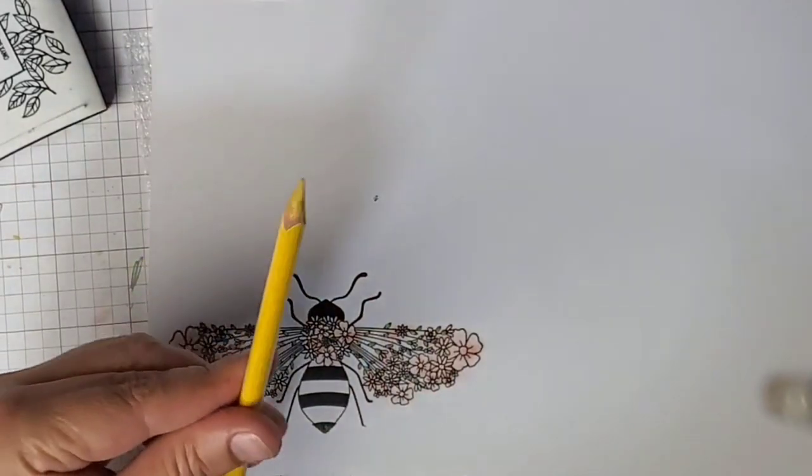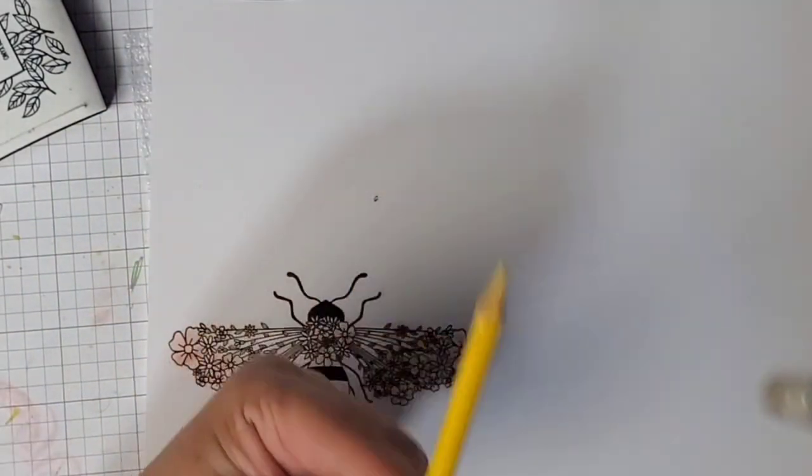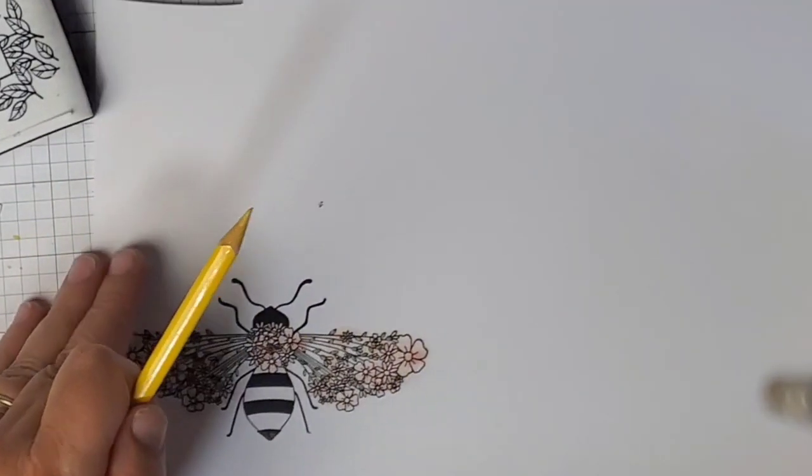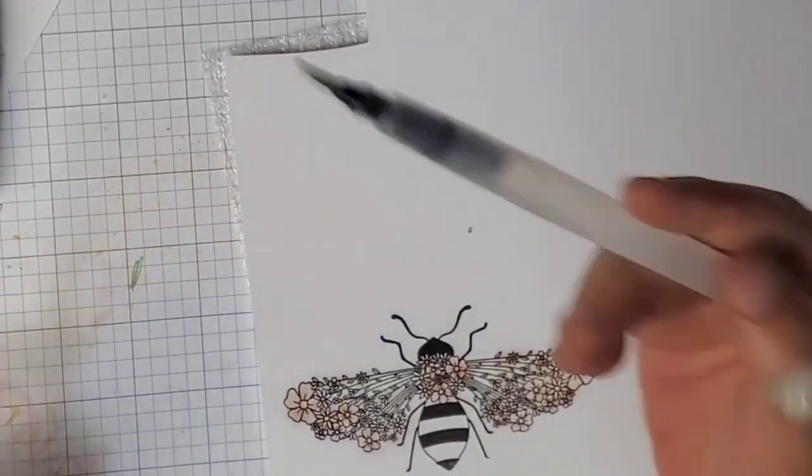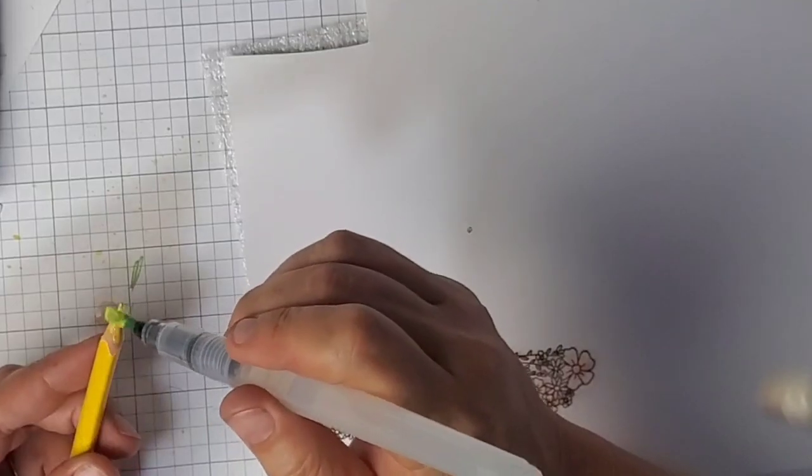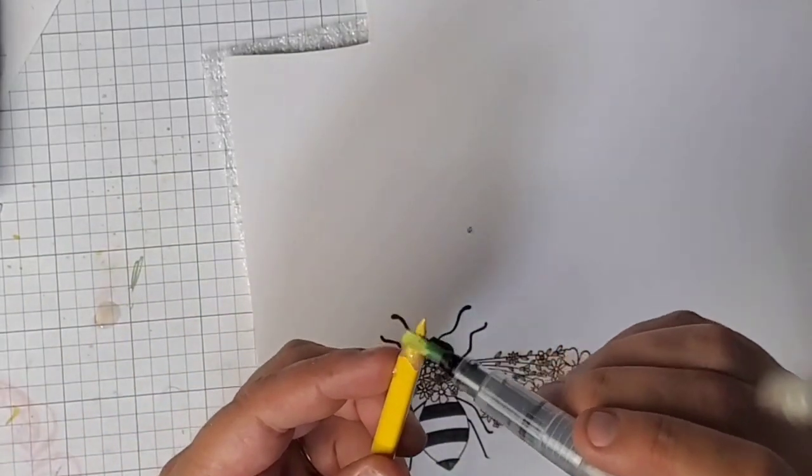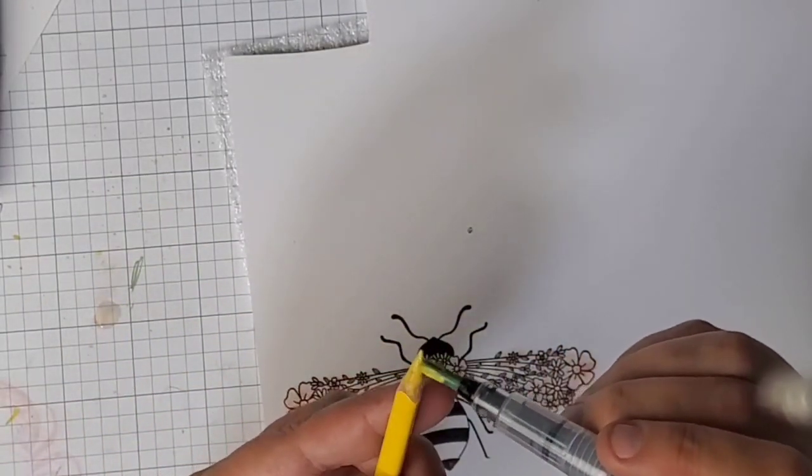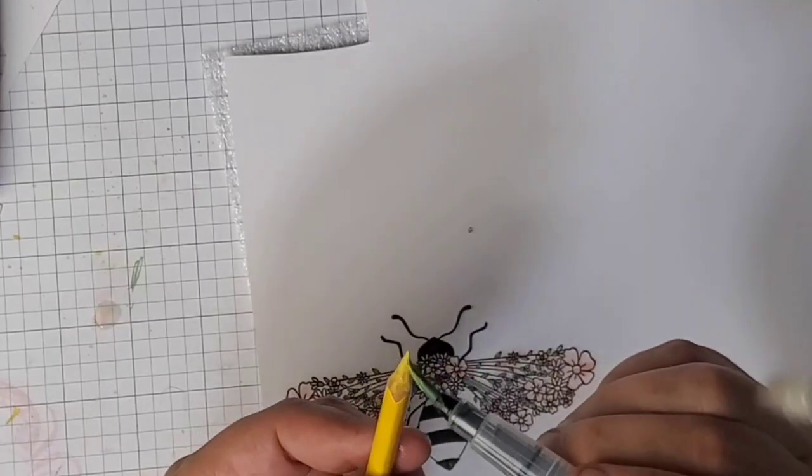If you hear those dogs, they pushed my door open again. I think they're playing with Johnny. Next, we're going to take our watercolor pencil again and our water brush. We're going to get it nice and wet, start getting that color moving up here on the tip.